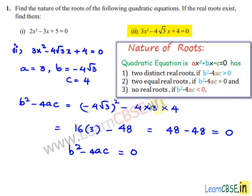Since the discriminant b² - 4ac is equal to 0, the given equation has two equal real roots.